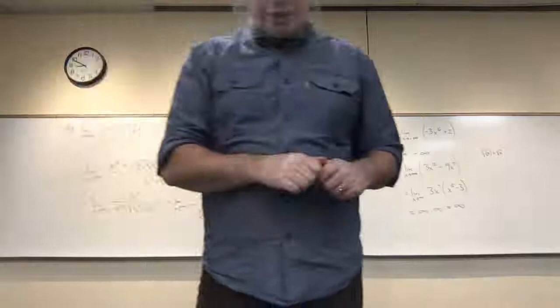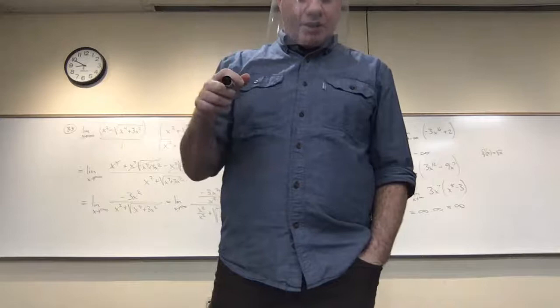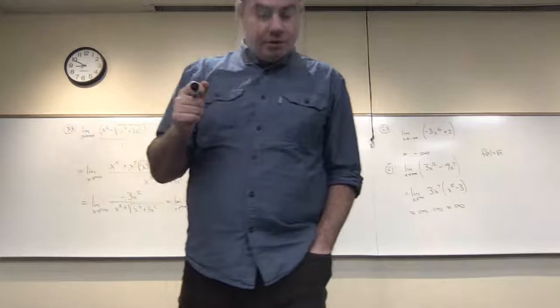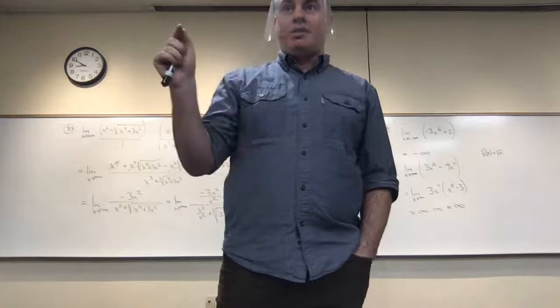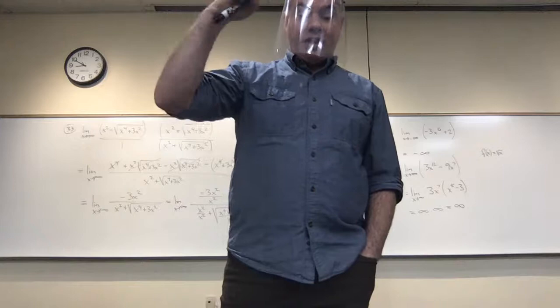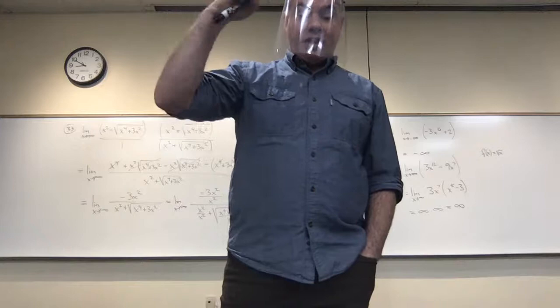For problem 27, the power of x on top is bigger than on the bottom, so it's going to positive or negative infinity. Since we're plugging in negative infinity and the top is squared, the top goes to positive infinity. The bottom is going to negative infinity, so a very big positive number over a small negative number gives negative infinity.